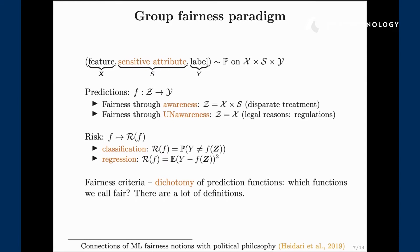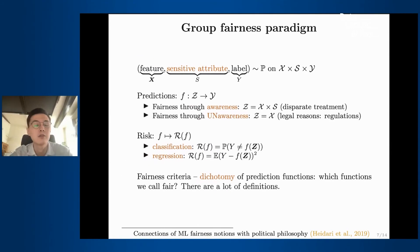The final thing, the most interesting thing, is the fairness criteria. On the high level, fairness criteria is just a dichotomy of prediction functions. We are going to call some prediction functions fair and some prediction functions unfair. Our goal is to build an algorithm which outputs a prediction function that is fair or close to be fair. In general there are a lot of definitions of fairness criterias, but all of them can be pretty much described by these three.